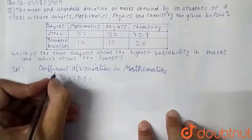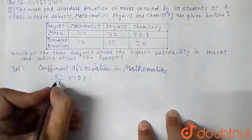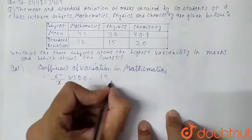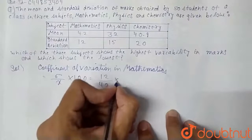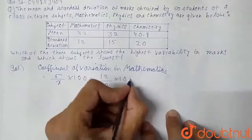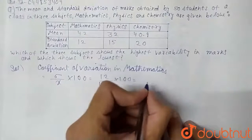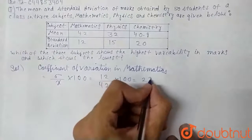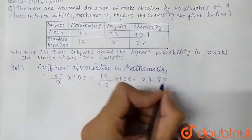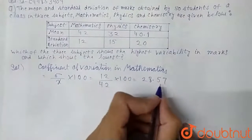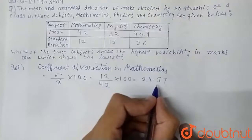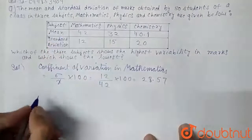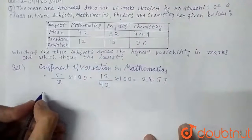For mathematics, we have sigma = 12 and mean = 42, so CV = (12 / 42) × 100 = 28.57. This is the variability of mathematics.